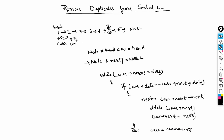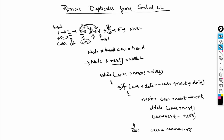Tracing through: current starts at head. If current's data doesn't equal current's next data, current moves forward. When we reach a pair of equal nodes — say two 3s — the if condition triggers. We set next = current.next.next (pointing to 4), delete current.next (the duplicate 3), set current.next = next. The list becomes 1, 2, 3, 4, 5, 5 with null at the end. Current stays on the first 3 and next is on 4.